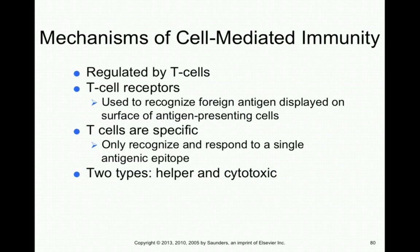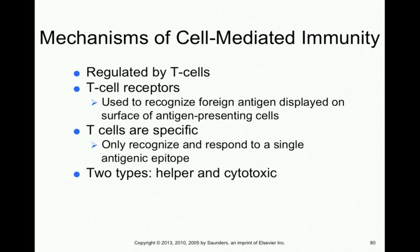Cell-mediated immunity involves T cells with specific receptors used to recognize foreign antigens on antigen-presenting cells. T cells are specific, each recognizing only one type of antigen, but because there are many different types of T cells, the immune system can collectively recognize potentially millions or billions of different antigens. Helper T cells (CD4 positive) release cytokines that activate other immune cells, while cytotoxic T cells directly participate in the immune response by targeting foreign cells.